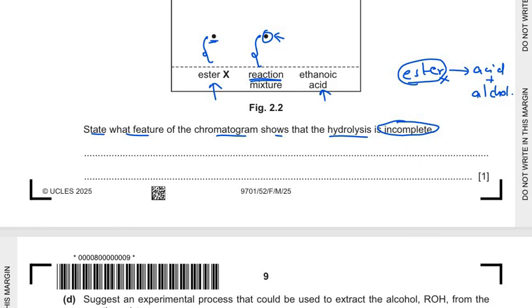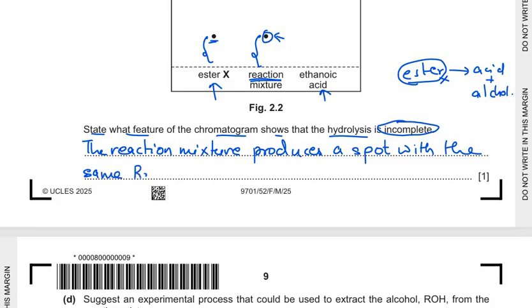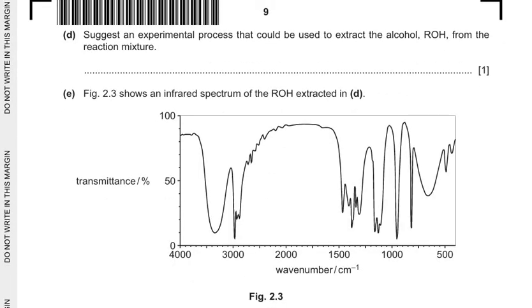So that shows that the reaction mixture still contains ester. So we can say that the reaction mixture produces a spot on chromatogram with the same distance, also you can write the same RF value as ester X. So this is how we can make out whether the ester is present or not.